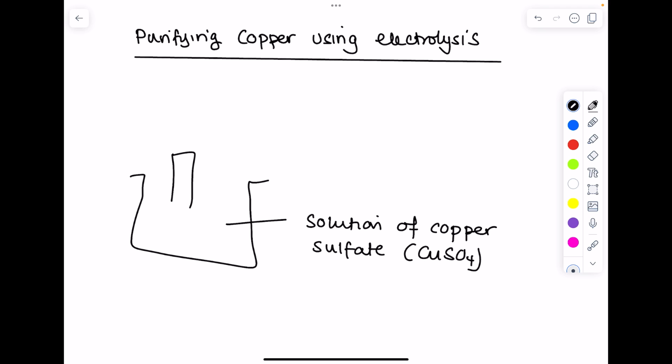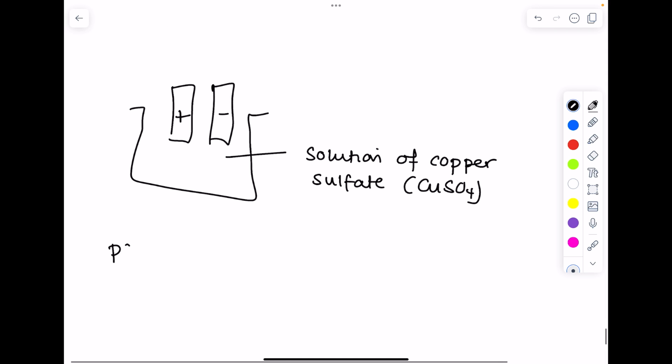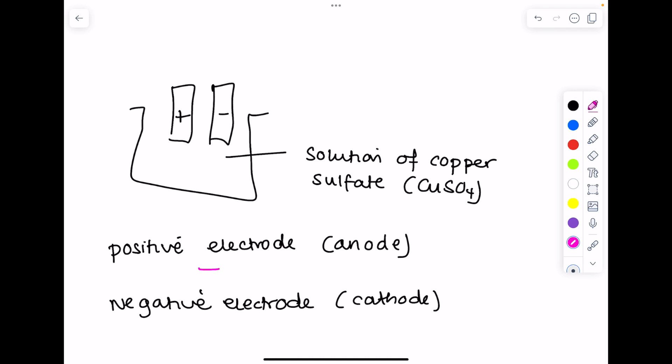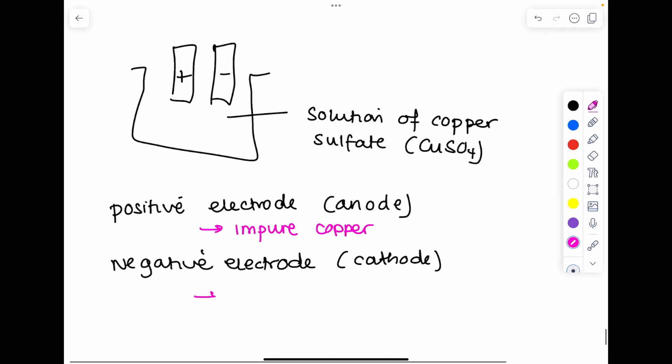There's the formula of copper sulfate. Then you need your electrodes. So your positive electrode is your anode and your negative electrode is your cathode. In terms of what these electrodes are made from, the anode is made from impure copper. The cathode is made from pure copper.